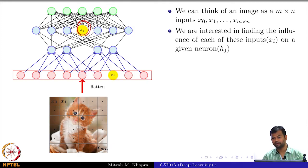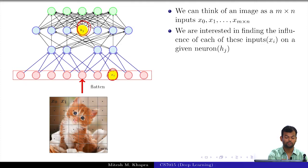Now what is one way of computing influence that you have learned in this course? What is the hero of this course? Gradients, right. So gradients tell you the influence. So now can you tell me if I want to compute what is the influence of this input on this neuron, what would you do? ∂h_j/∂x_i.